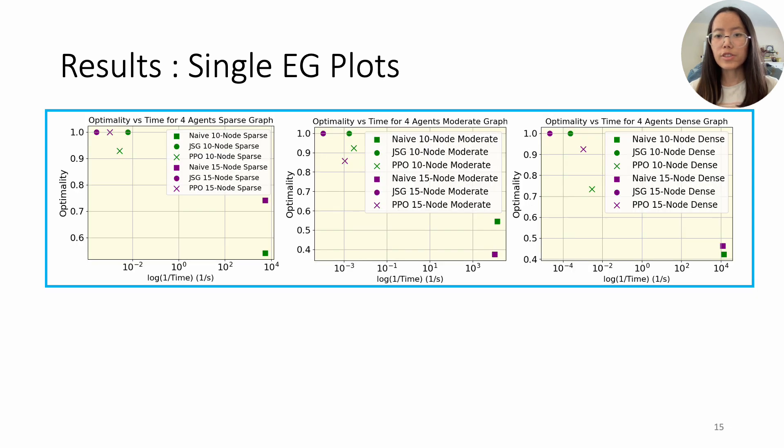For four agents on sparse graph, PPO excels over GSG in time and optimality efficiency on 15-node but not on 10-node. On moderate-density graph, PPO strikes a balance between GSG and the naive in both 10 and 15-nodes.